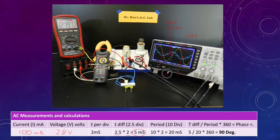So that's 10 divisions. And if I take 10 divisions and multiply them by 2 milliseconds per division, I end up with a total period of 20 milliseconds. So I've got 20 milliseconds for my total.